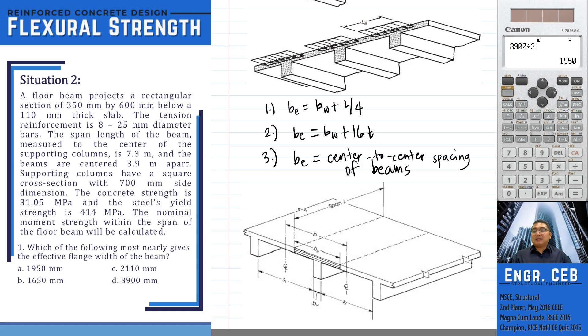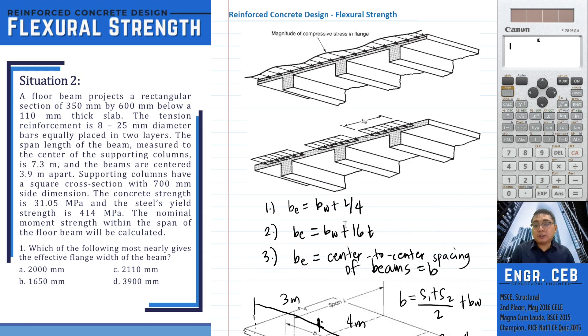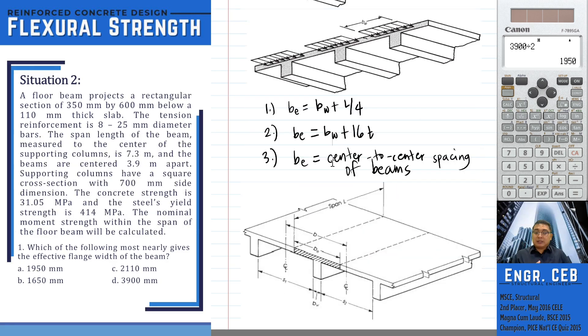When we say span, this is the cleared span between the ends of the beam. If there are columns at the end of the beam, we should subtract the width of the columns to get the cleared span of the beam. B sub W is the projected width of the beam under the slab. The variable T is the thickness of the slab. For the center-to-center spacing of beams, it is also equivalent to the centerline distances of the midpoint of the slabs.